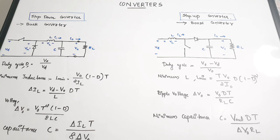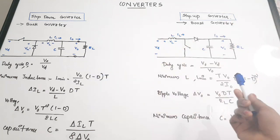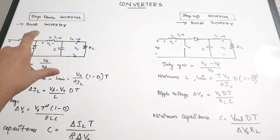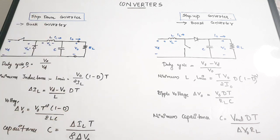Boost and buck converters are one of the most important areas of power electronics. They are compulsory topics in the power electronics syllabus for both EEE and EC branches. Next is the boost converter, which is essentially the reverse of the buck converter — instead of reducing the voltage, it boosts the voltage level.